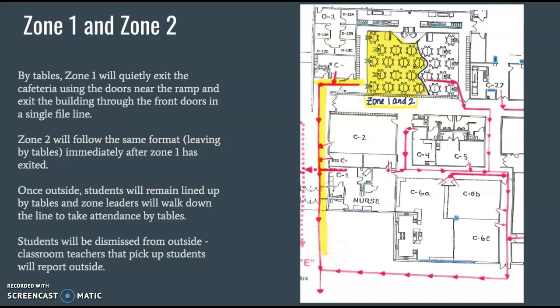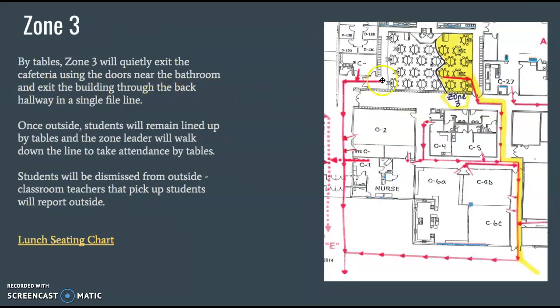Zone 3 goes out a different entrance. Zone 3 will leave when Zone 1 leaves, by table, out the doors by the bathrooms, going back down the back hallway to exit the doors by the other entrance by JCLC. Those students in Zone 3 will meet over there. It's important to stay in line with your table because your attendance will be taken by the zone leader according to your table. These students will also be dismissed back to classes from outside.